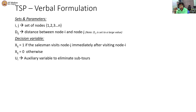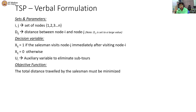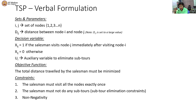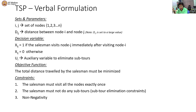With these sets and parameters, our objective is to minimize the total distance that the salesman is going to travel. There are basically three constraints. The first is that the salesman must visit all the nodes and he should visit them exactly once — he should not revisit a node. From 1 to 2, he should not go back to 1 and then go to 3. Every node must be visited and it must be visited only once. The second constraint is that sub-tours must not be possible — sub-tours must be eliminated. And finally, there is a non-negativity constraint: all decision variables must be non-negative and binary.